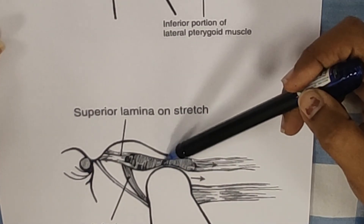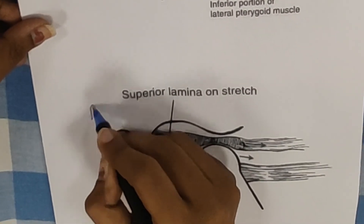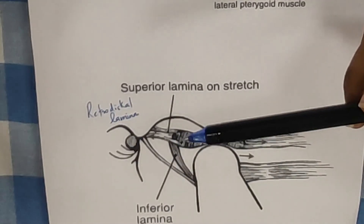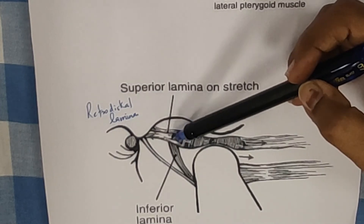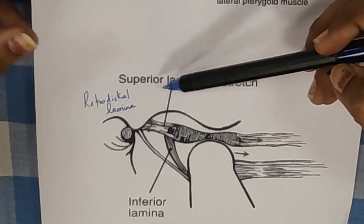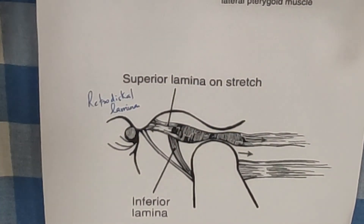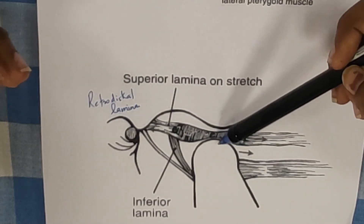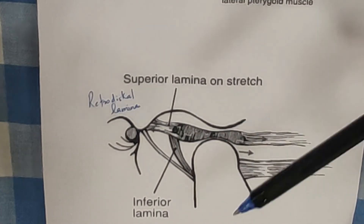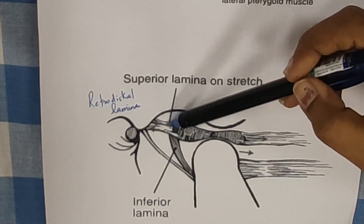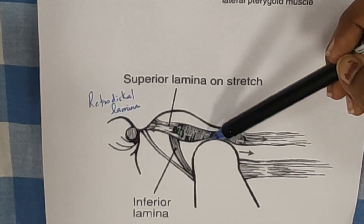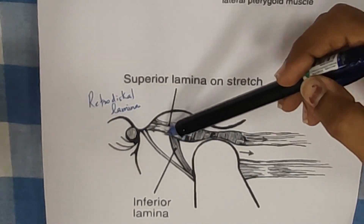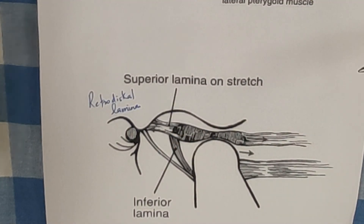Another structure attached to the disc is the retrodiscal lamina, which is present behind the disc. The retrodiscal lamina is a complex connective tissue attached posteriorly to the disc and attaching to the temporal bone. It has superior and inferior portions. In summary, the retrodiscal lamina checks excessive anterior movement of both the disc and the condyles of the mandible. During mouth opening, when the mandibular condyle translates anteriorly, the retrodiscal lamina prevents excessive anterior movement of the disc and pulls it back. During mouth closing, it ensures smooth posterior movement of the disc.